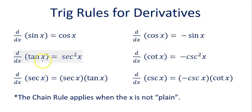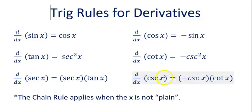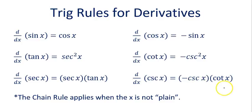The derivative of tangent is secant squared. The derivative of cotangent is negative cosecant squared — note which one is negative. The derivative of secant is secant times tangent, and the derivative of cosecant is negative cosecant times cotangent. There's a similar paired relationship between each of those sets.